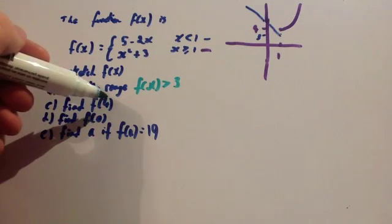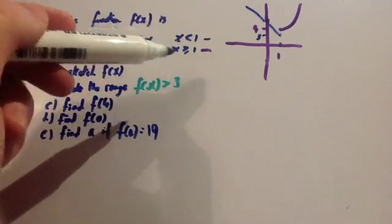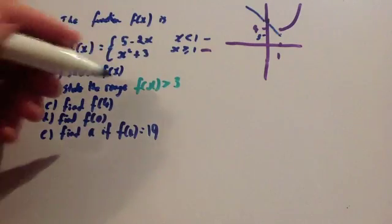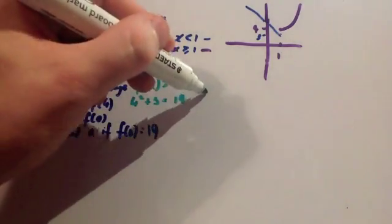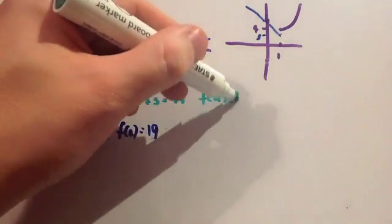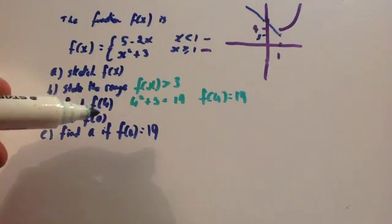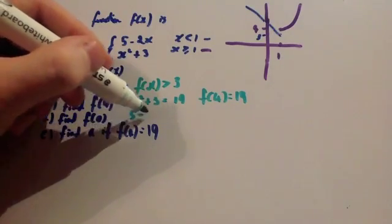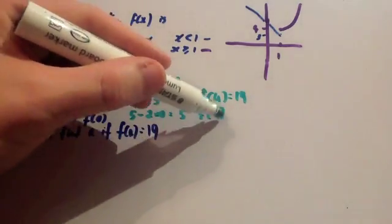Next: find f(4). We're putting 4 into these functions. Since 4 ≥ 1, we use x² + 3. So 4² + 3 = 16 + 3 = 19. Therefore f(4) = 19. Next: find f(0). Since 0 < 1, we put 0 into 5 − 2x: 5 − 2(0) = 5. So f(0) = 5. The most important part for these two is just knowing which piece you're putting it into.